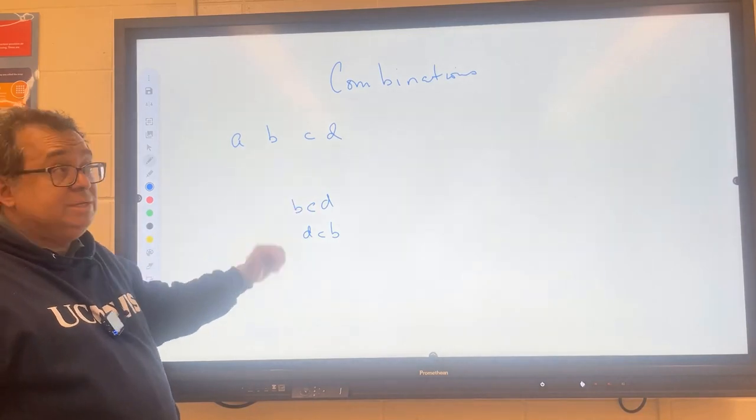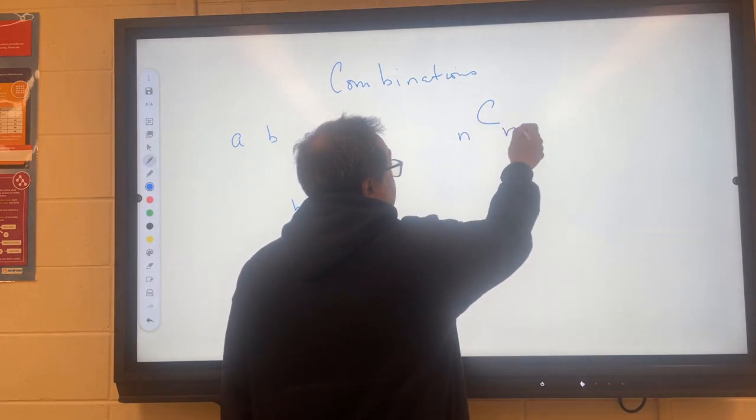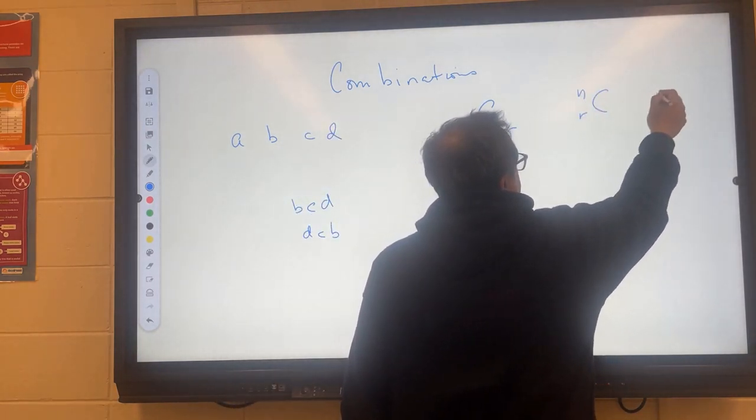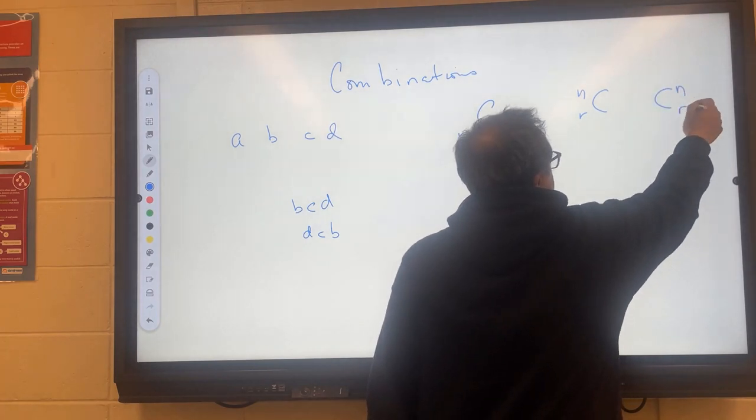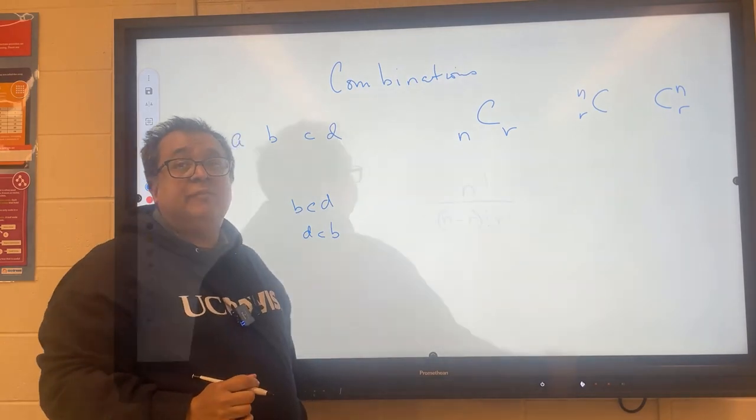So here what we're doing is we're doing a combination, and it's written again n choose r. Likewise, I can also write it like this, and I can also write it like this. They're all the same. I'm just going to write it like this, and the formula is slightly different.